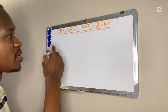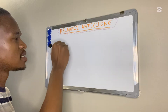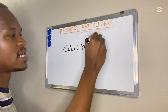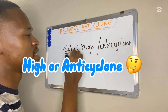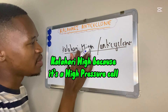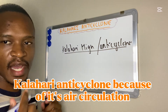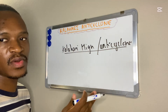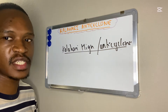We need to talk about the Kalahari High. We need to understand exactly why the Kalahari High, or Kalahari Anticyclone — remember, the high pressure can also be called an anticyclone. We call it Kalahari High because it's a high pressure cell, and anticyclone because of the circulation of a high pressure. So a Kalahari High can also be called a Kalahari Anticyclone.